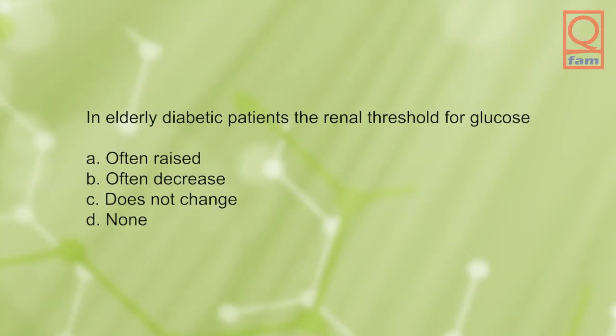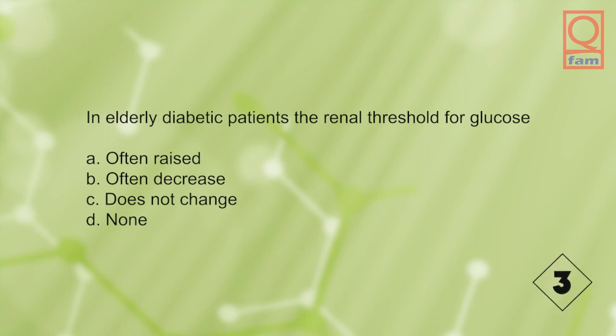In elderly diabetic patients, the renal threshold for glucose: A) often raised, B) often decreased, C) does not change, D) none. The answer is C, does not change.